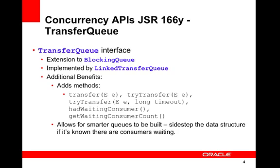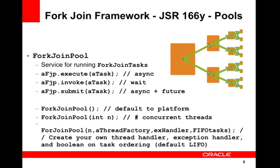Non-blocking and timeout versions of try-transfer are also available. A transfer queue may be queried via has-waiting-consumer to check whether any threads are waiting for items, which is a converse analogy to a peek operation. Like other blocking queues, a transfer queue may be capacity-bound; if so, an attempt to transfer may initially block waiting for available space.